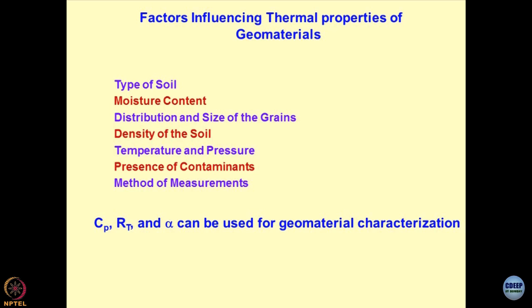Presence of contaminants depends on what type of contaminants are present in the geomaterials — liquid, solid, or gaseous phase — and they would have their own influence. This factor has not been investigated much until now; it requires a lot of understanding and experimentation to frame thumb rules. Method of measurement also matters — it depends on what type of measurement method is being employed for these studies, and I will be talking about different methods.